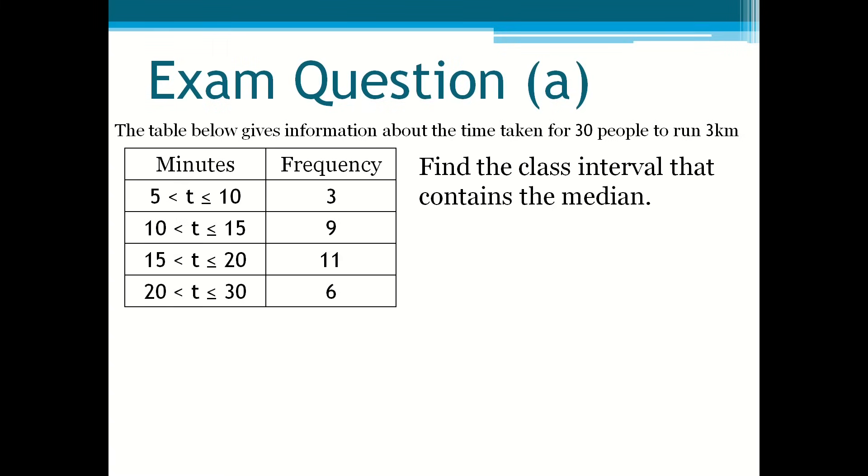So the first row shows any time that is between 5 minutes and 10 minutes. Including 10 minutes but not 5 minutes, there are 3. Three of those people took between 5 to 10 minutes. Nine people took between 10 to 15 minutes. Eleven people took 15 to 20 minutes. And 6 people took between 20 to 30 minutes.